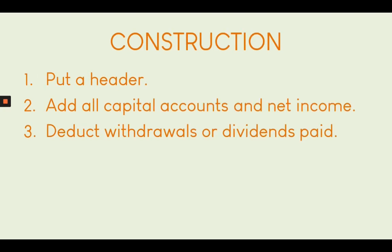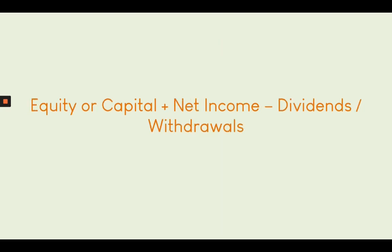To construct a statement of changes in equity: number one, we put a header; number two, we add all the capital accounts and the net income; number three, we deduct any withdrawals or dividends paid. The formula for getting the ending balance of capital or equity is: initial capital or equity account plus net income, less dividends or withdrawals.